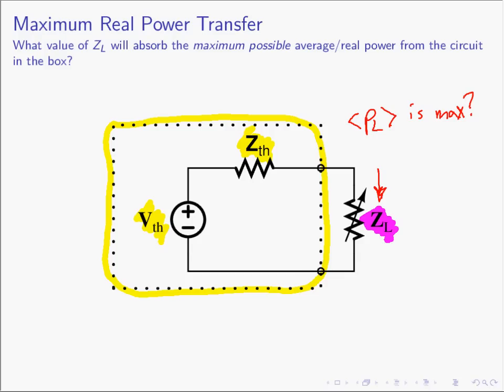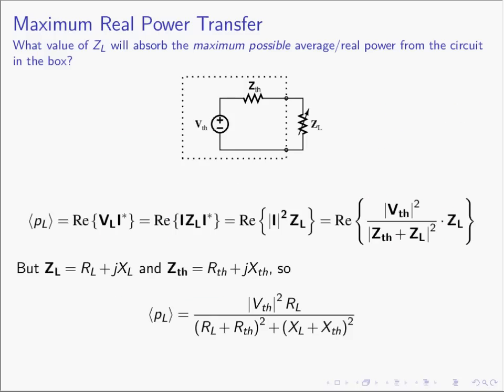Z sub L is composed of a resistance and a reactance — two parts — and I'm looking for the values that, when chosen together, will maximize the average power. To find this, we need to figure out what the average power in the load is. The average power, the real power, is the real part of the complex power.